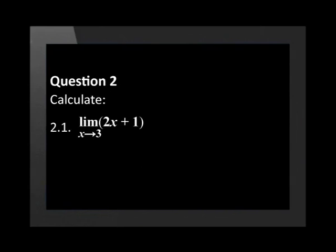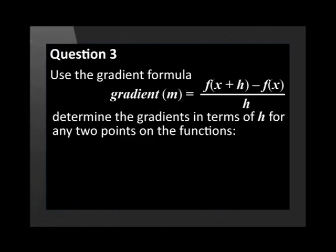Calculate the limit of 2x plus 1 as x tends to 3, the limit of x squared minus 9 divided by x minus 3 as x tends to 3.